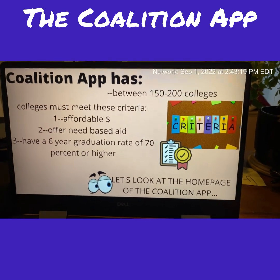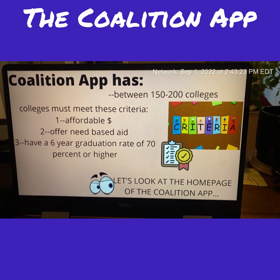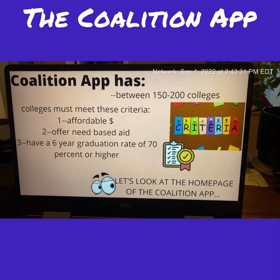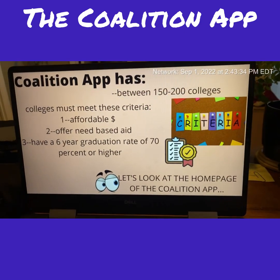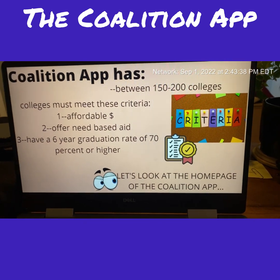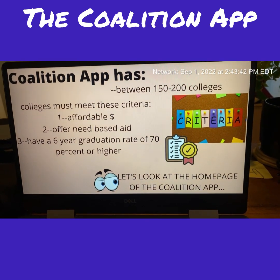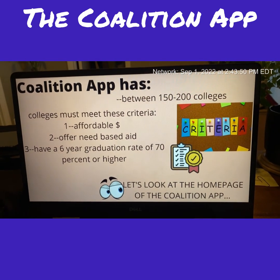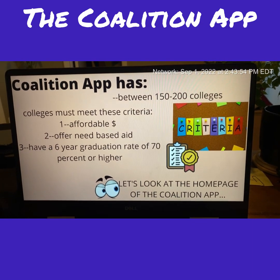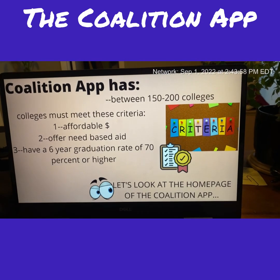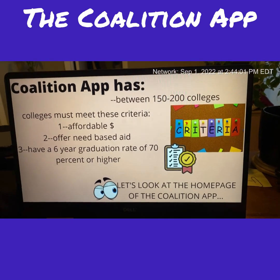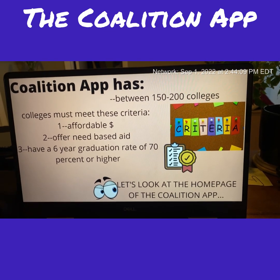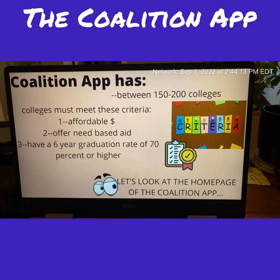The criteria for Coalition member schools include: they must be affordable in cost; they must offer need-based aid — as opposed to merit-based aid tied to scores and grades, need-based aid considers your family's financial situation; and they must have a six-year graduation rate of 70% or higher. That last point is important — you don't want to spend ten years in school. The goal is to finish in four years, six at most, and move into your future profession.